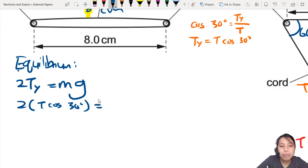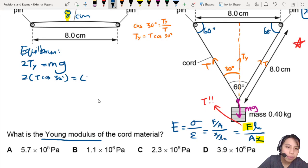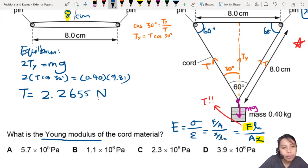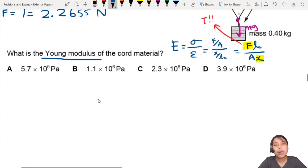What is mg? 0.4 kg, okay. Let's write everything out: 0.4 times 9.81. I rearrange, skip some steps, and find what is T. I get 2.2655 newton. This is also known as F, so we're going to plug this force into our equation now to do the final calculation.